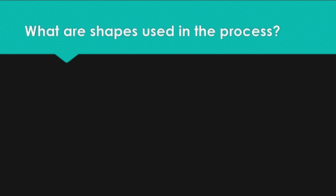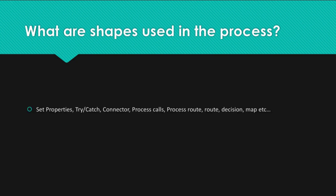Question: What are shapes used in the process? Answer: Set properties, try/catch, connector, process calls, process route, route, decision, map, etc.